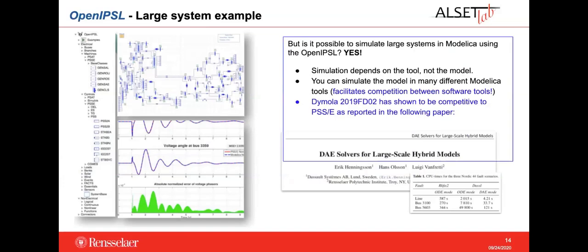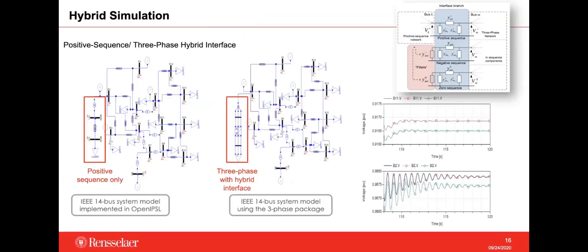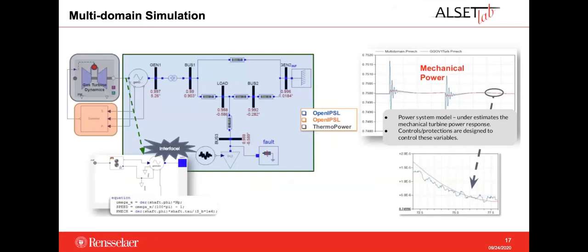The first application is that the library now has a dedicated sub-package of models for the representation of three-phase elements, and an interface model that allows their interconnection to positive-sequence elements. This allows accurate representation of the effects of unbalances in the grid. This study was conducted to show how unbalanced conditions can harm system stability and how you can represent those unbalances using the three-phase package in OpenAPSL.